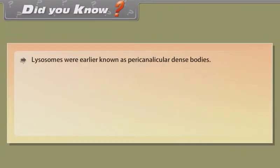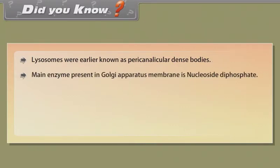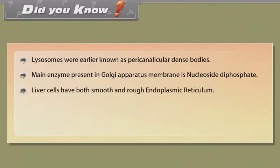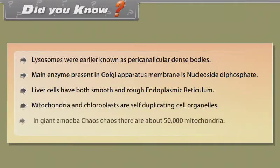Did you know? Lysosomes were earlier known as pericanalicular dense bodies. The main enzyme present in Golgi apparatus membrane is nucleoside diphosphatase. Liver cells have both smooth and rough endoplasmic reticulum. Mitochondria and chloroplasts are self-duplicating cell organelles. In the giant amoeba Chaos chaos, there are about 50,000 mitochondria.